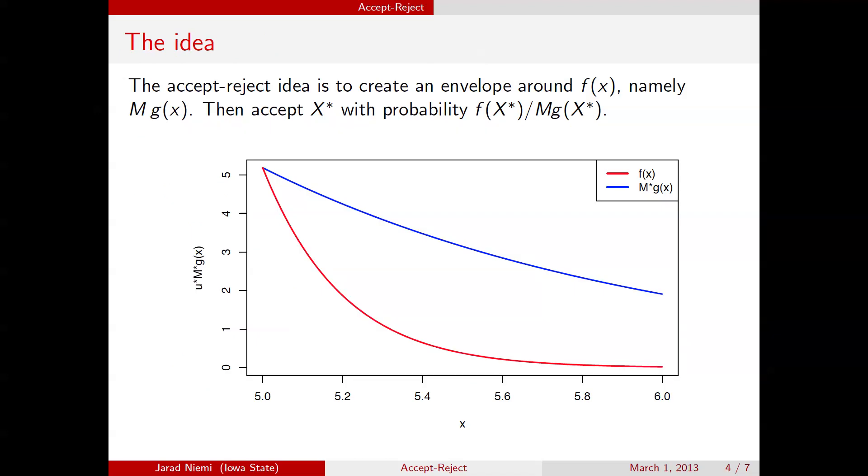Here's the idea. The idea is that the accept-reject method creates an envelope around f, or maybe more formally, above f. In this envelope, we're going to call m times g of x, or it is m times g of x.